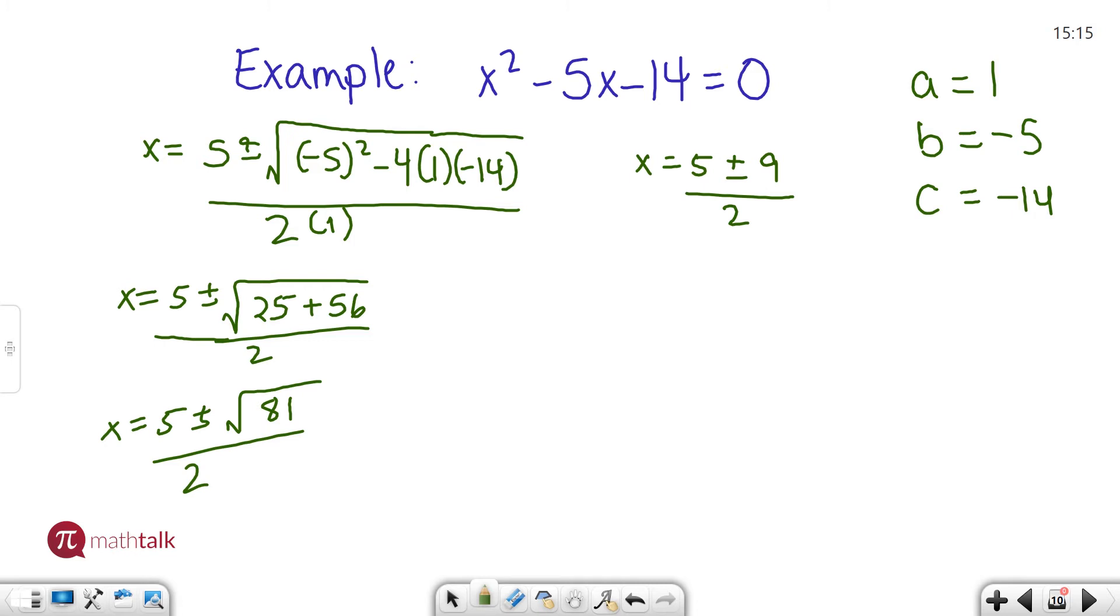So there's a plus minus sign in the middle here. What that represents is I have two different answers. Quadratic formulas have two different answers in your solution. So you want to make sure you find both of them. So what really happens is I have x equals 5 plus 9 over 2. And x equals 5 minus 9 over 2. And each of those is my answer. So 5 plus 9 is 14. And 14 divided by 2 is 7. And then 5 minus 9 is negative 4. And negative 4 divided by 2 is negative 2. So these are my two solutions to this quadratic formula.